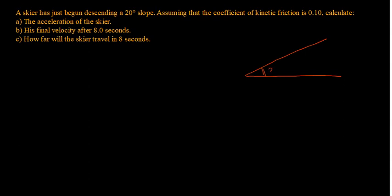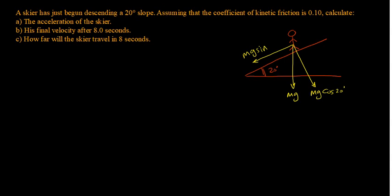Here is our angle of 20 degrees and this is our skier on the incline surface. The forces we have are: the weight mg, which can be broken into mg cosine 20 degrees — that's the perpendicular component — and mg sine 20 degrees, which is the parallel component. We also have the normal force perpendicular to the surface, and finally the kinetic friction force acting opposite to the direction of motion.